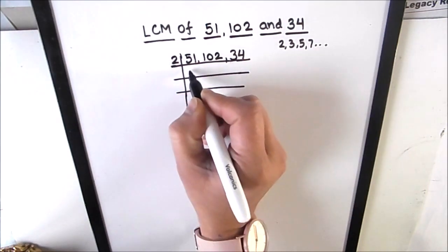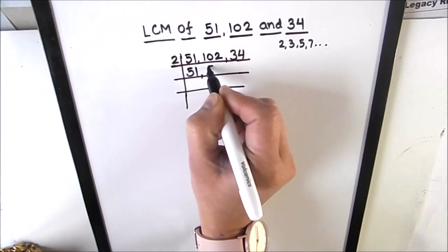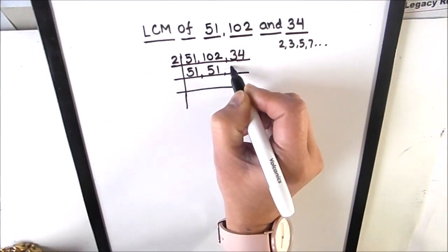So let's use 2 to divide 102 and 34 as these two numbers are even. 51 is an odd number so we are not going to divide it, we are going to write it as is. So 2 times 51 is 102, 2 times 17 is 34.